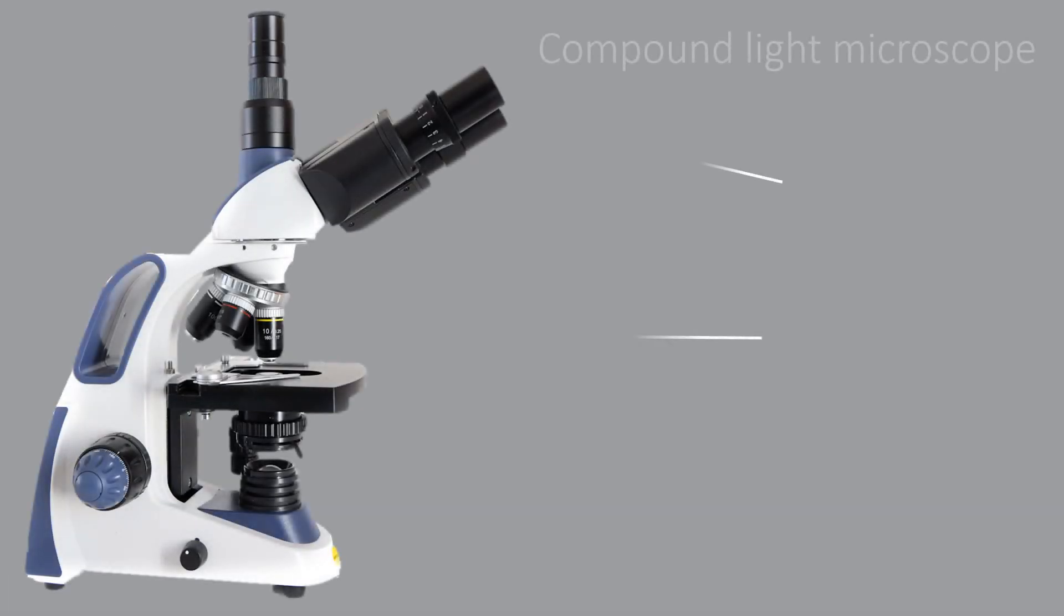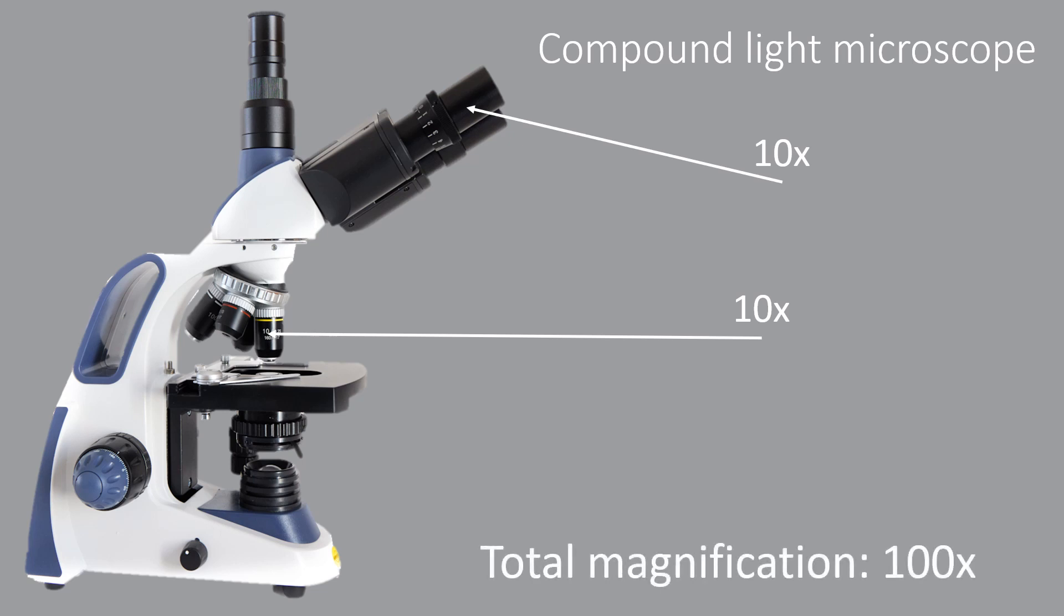The magnification of a microscope is determined by multiplying the magnification of the eyepiece by the magnification of the objective. For example, a 10 times magnification objective and a 10 times magnification eyepiece will result in a total magnification of 100 times.